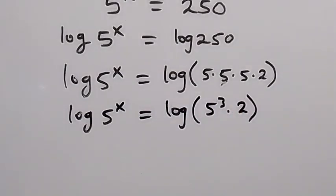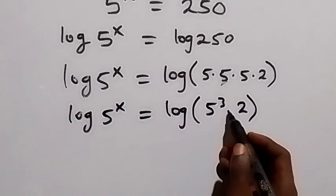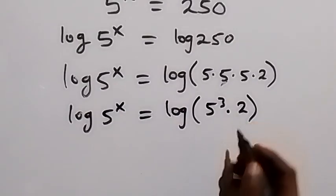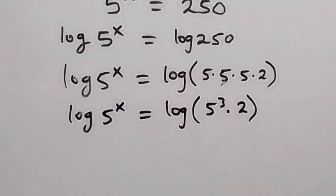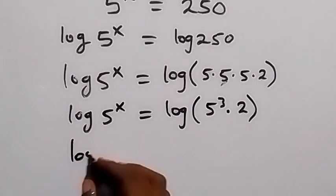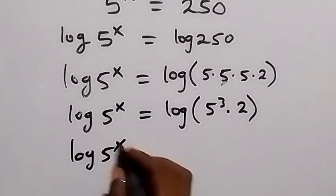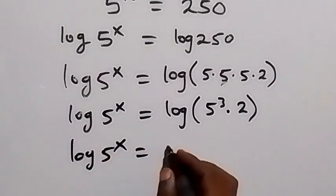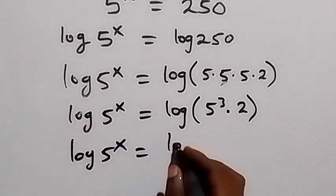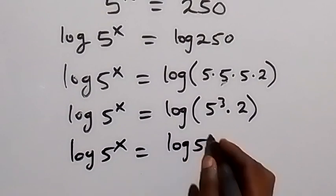Then when we apply the law of logarithm here, we can separate this product and it will be the sum of two logs. We have log 5 raised to power x equals log 5 raised to power 3 plus log 2.